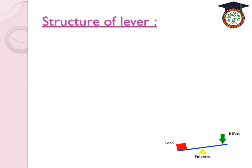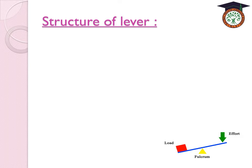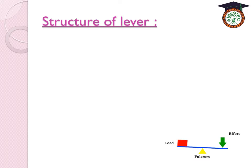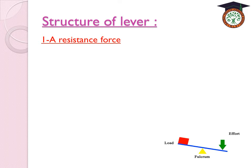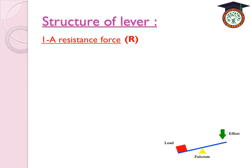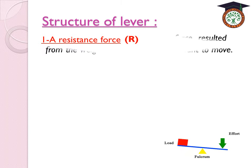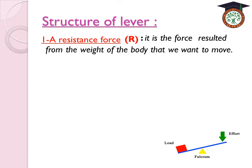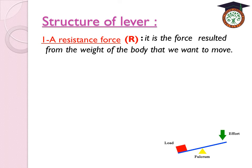Now let's study the structure of the lever. Any lever is composed of three main parts. The first part, shown in red, is the load or resistance force. The resistance force always takes the symbol R. The resistance force is the force that results from the weight of the body we want to move or deal with.